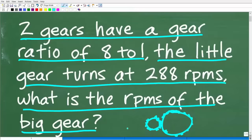We're talking about two gears, a small gear and a big gear, and revolutions per minute is how fast a gear turns in one minute. So this particular gear is turning 288 turns or revolutions in one minute.